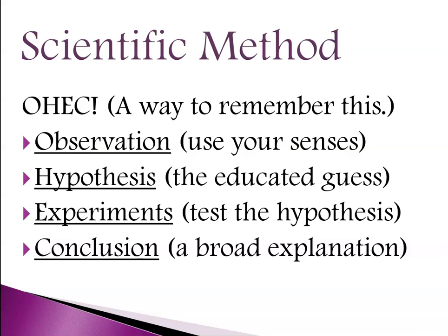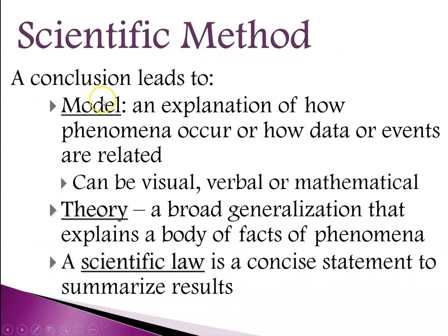The light goes on and I have a conclusion. My broad explanation: when you flip on a light switch, unless there is electricity running through the circuit, no power will get to your devices and the lights won't turn on. So that's an example of using the scientific method — observation, hypothesis, experiments, conclusion. Often that conclusion leads to a model of some sort, which is an explanation of how phenomena occur or how data or events are related to one another.